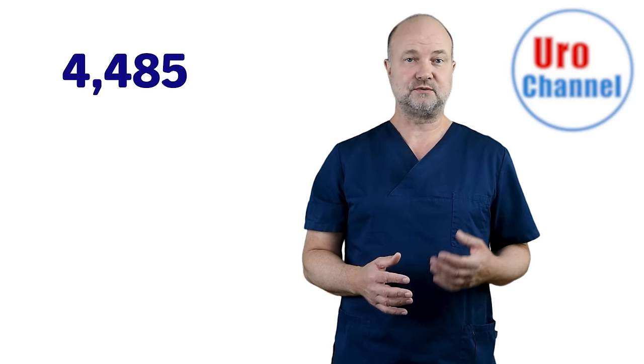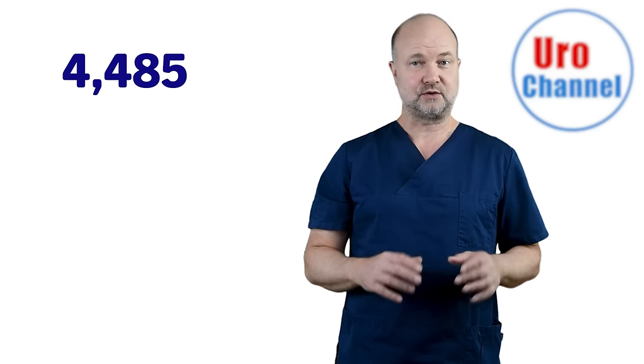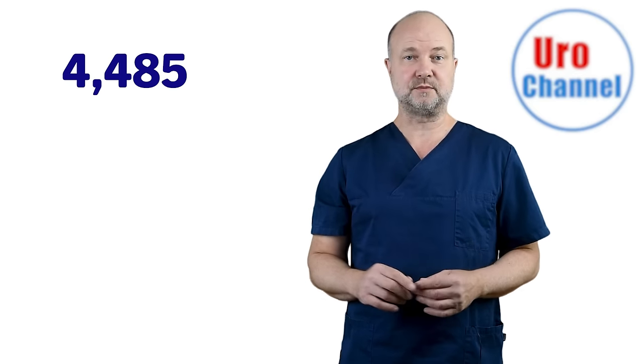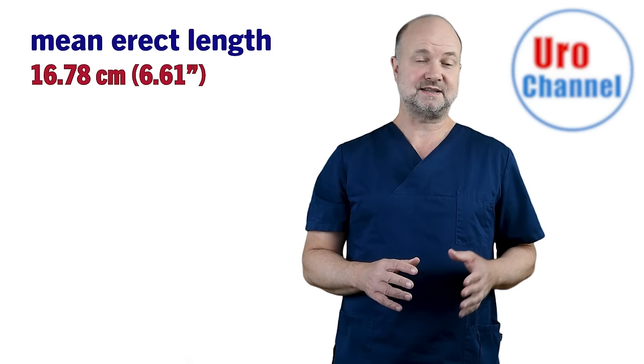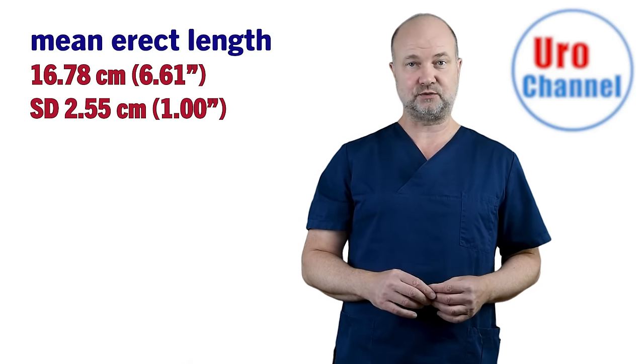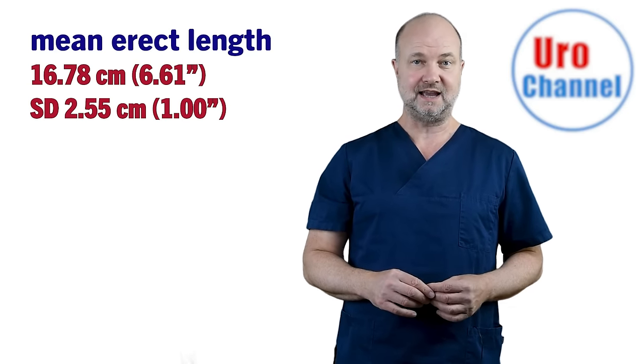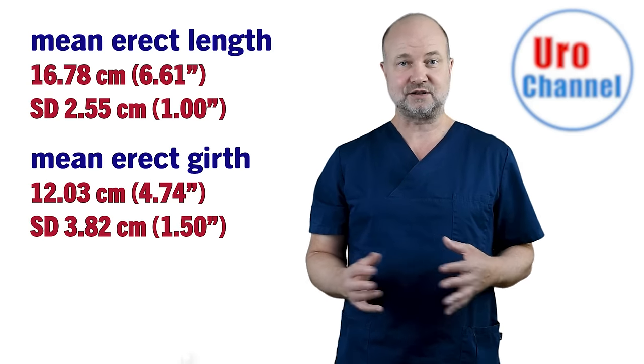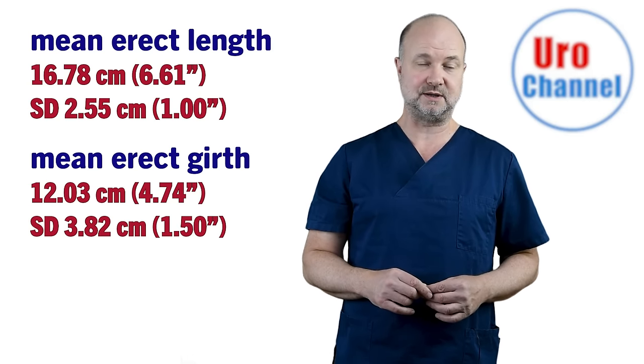Let's have a look at the numbers from Italy. 4,485 men from all parts of Italy participated in a large study performed by Di Maudo and co-workers. Mean erect length was 16.78 cm with a standard deviation of 2.55 cm and mean erect girth was 12.03 cm with a standard deviation of 3.82 cm.